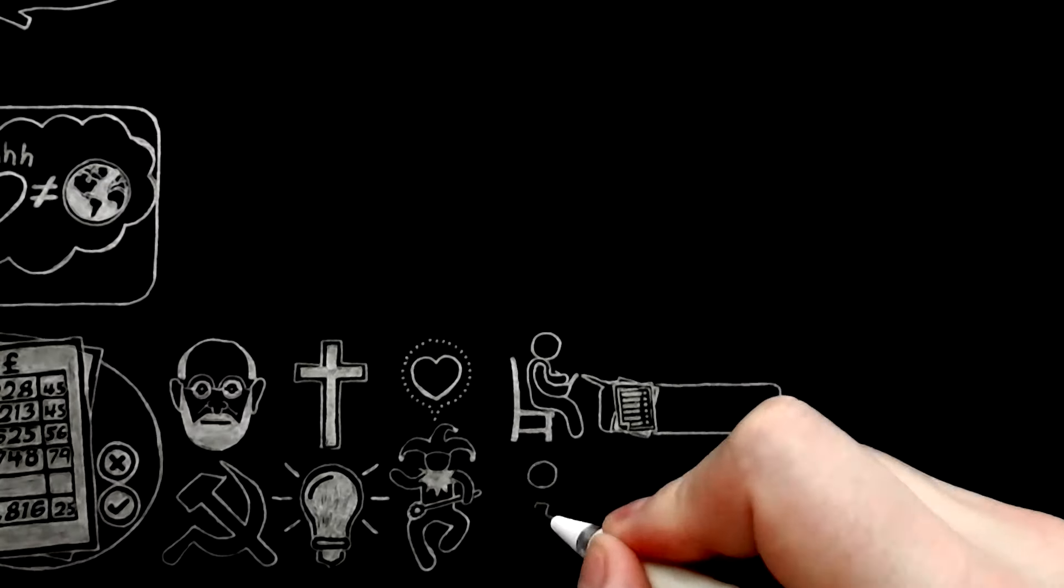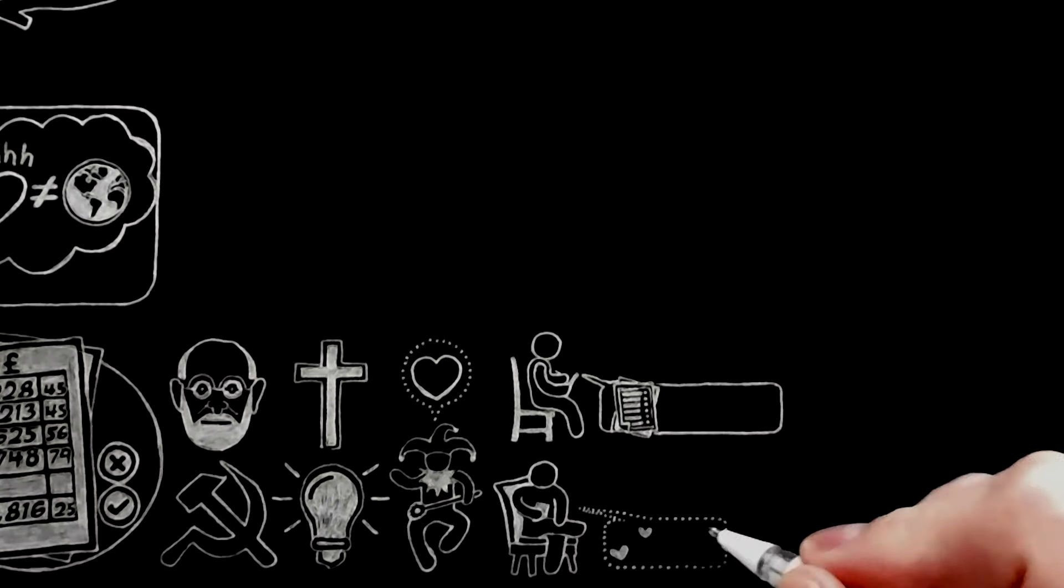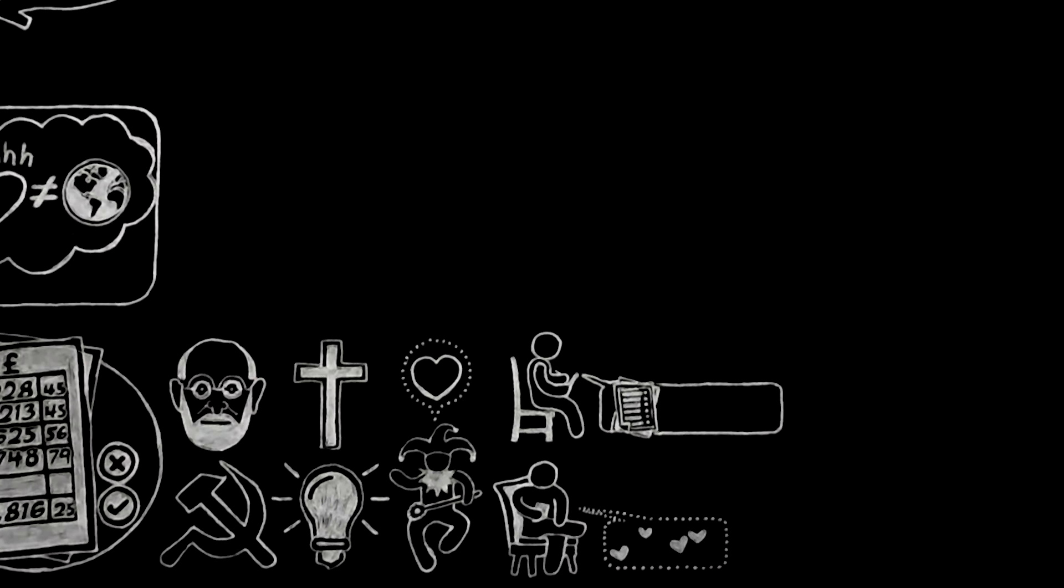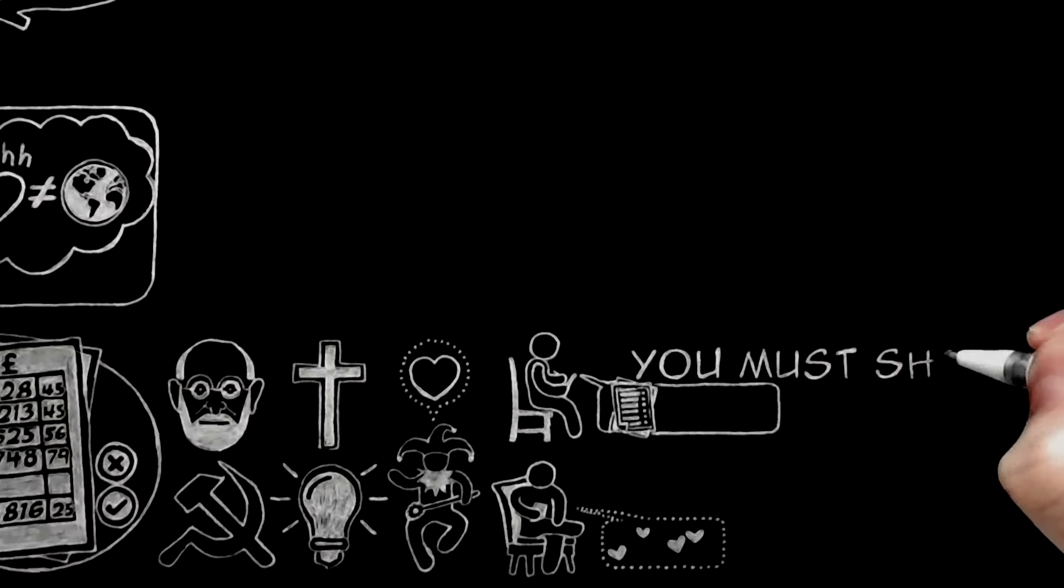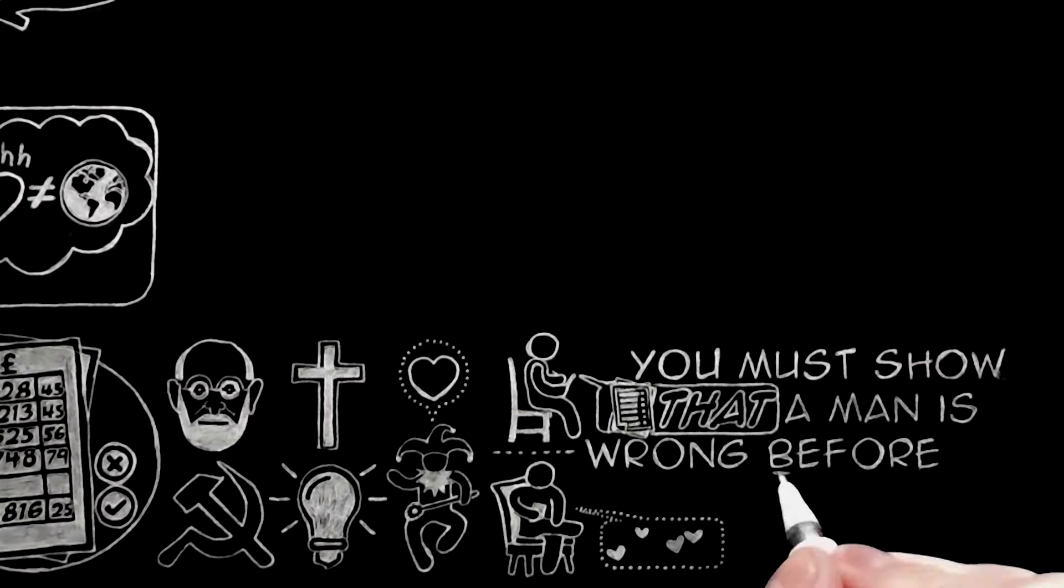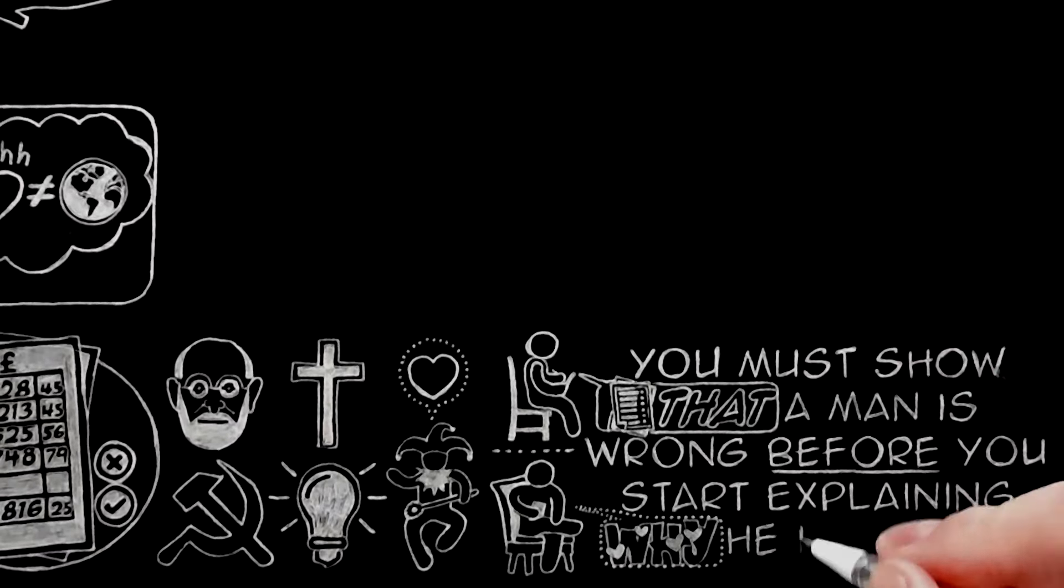Afterwards, if you like, go on and discover the psychological causes of the error. In other words, you must show that a man is wrong before you start explaining why he is wrong.